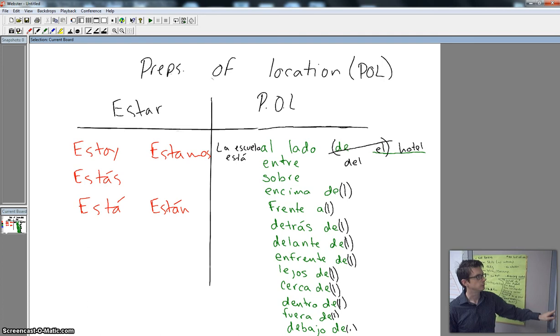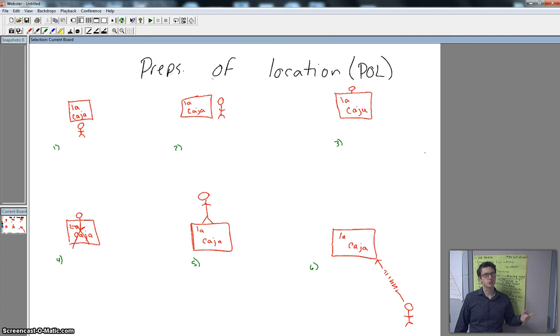Okay, so here we have six pictures, six examples that we're going to use with our prepositions of location. So what we've got is a person. We've got una caja, a box. Alright.